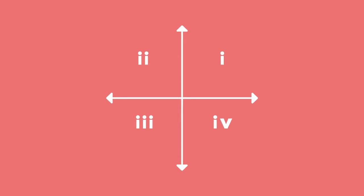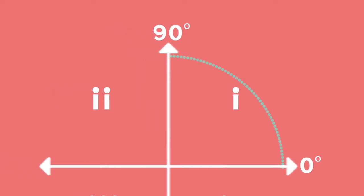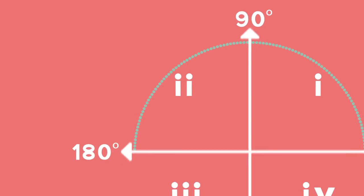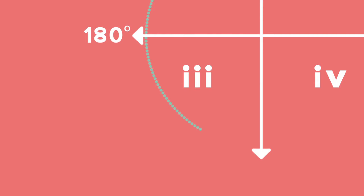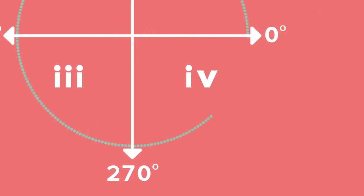All the angles in the first quadrant measure between 0 degrees and 90 degrees. All the angles in the second quadrant measure between 90 degrees and 180 degrees. All the angles in the third quadrant measure between 180 degrees and 270 degrees. All the angles in the fourth quadrant measure between 270 degrees and 360 degrees.